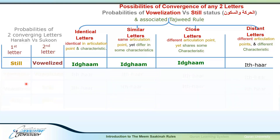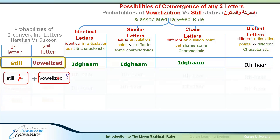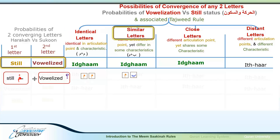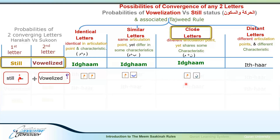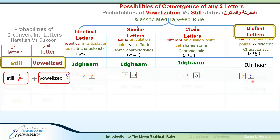The rules of Meme Sakina represent a special case of two converging letters — the first being a still Meme followed by a vowelized letter. The two converging letters will be identical if we have Meme and Meme. An example of similar letters is Meme and Ba, since both articulate at the lips — they are both labial letters. An example of close letters is Meme and Noon, since both share the characteristic of Ghunnah, nasalization. An example of distant letters is Meme and Ayn, since they share neither articulation point nor characteristics.